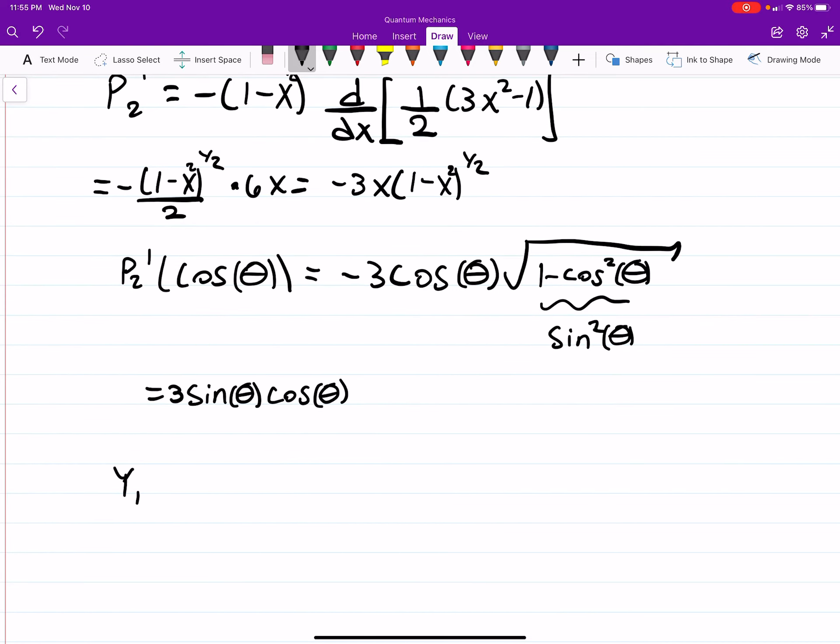So this is a very common, this is of course just sine squared, and if you square that you just get sine. So it's equal to 3 sine theta cosine theta.